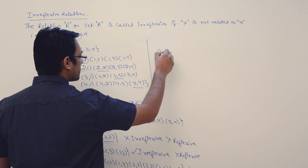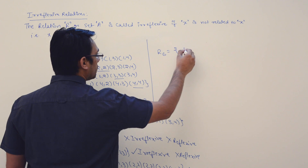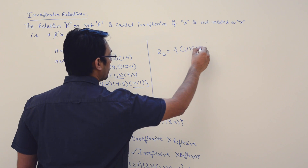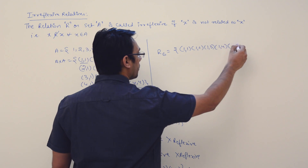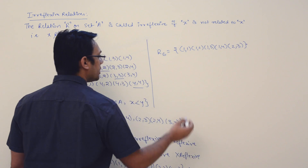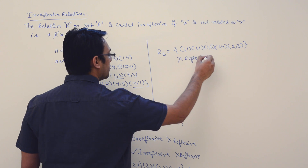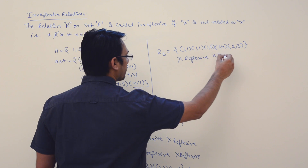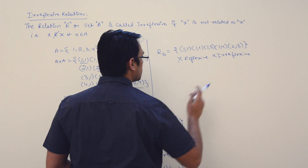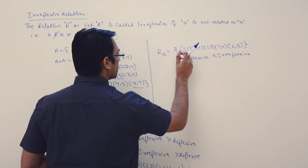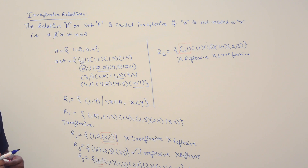Assume we have relation R6 defined on A×A containing pairs (1,1), (1,2), (1,3), (1,4), (2,3). This relation is not reflexive and also not irreflexive. It is not irreflexive because of the particular pair (1,1).